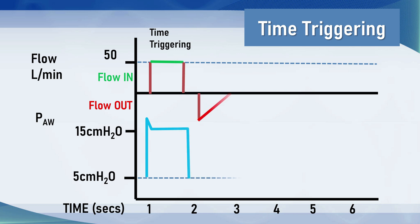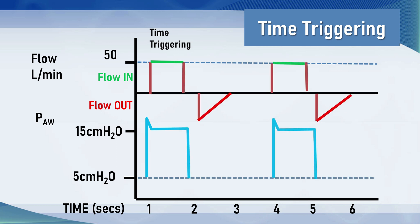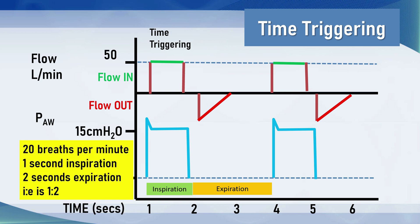This is an example of time triggering. Because flow is constant in the top scalar, it must be volume control, and as expiration does not immediately follow the end of inspiration there is an inspiratory pause, so the ventilator is time cycling. Inspiration lasts one second and expiration lasts two seconds — an I to E ratio of one to two. As the cycle is three seconds, the respiratory rate is 60 divided by three, which equals 20 breaths per minute.